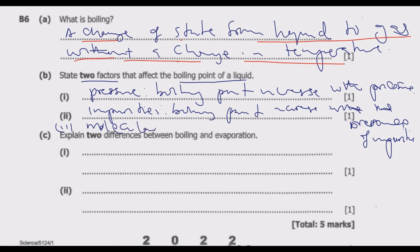Number three, in case you are required to give more, is molecular weight. The boiling point increases if the chain length of a molecule increases. So for a bigger molecular substance they have a higher boiling point, while a molecular substance with a smaller chain has a lower boiling point.